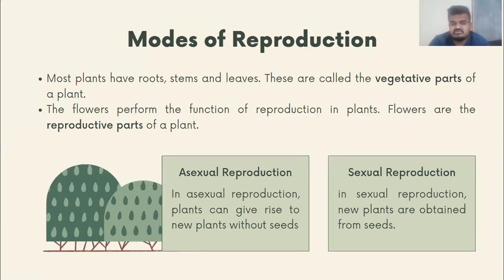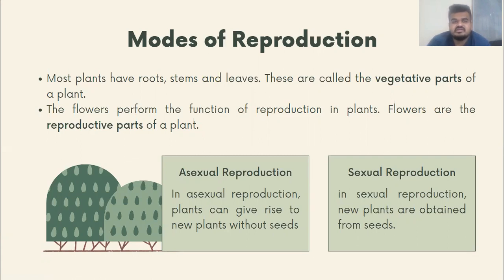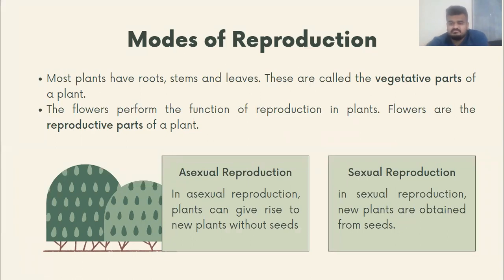Take the example of a mango tree from class 7: the mango tree gets flowers in spring and we get juicy mangoes in summer. So flowers perform the function of reproduction in plants, and therefore flowers are the reproductive parts of the plant.